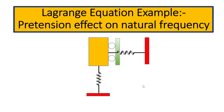Hello friends, welcome back. In this video lecture we are going to discuss about the Lagrangian equation example for pretension effect — how pretension affects the natural frequency of a system. If you have played guitar, you may have experienced that just by tightening the strings the natural frequency of the string changes. We will look at a simple mass-spring system connected to a string already under some pretension.